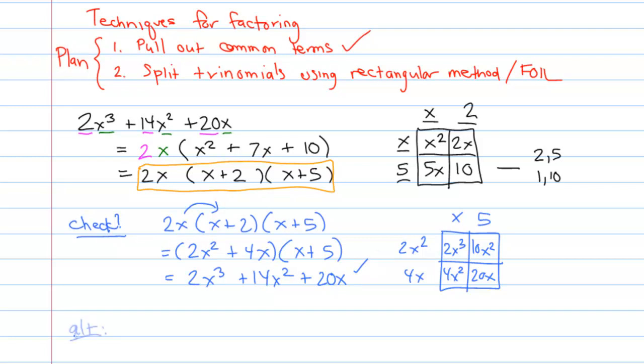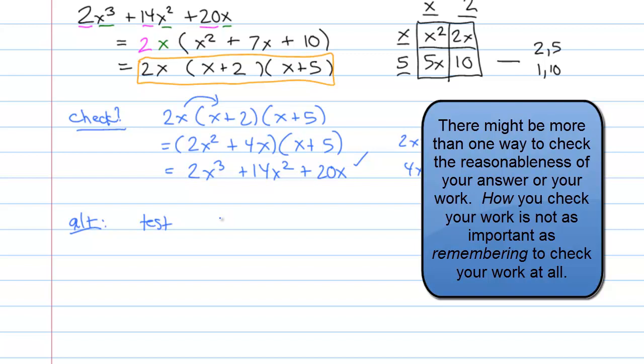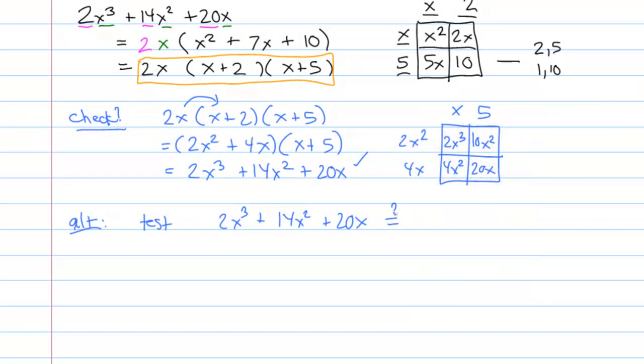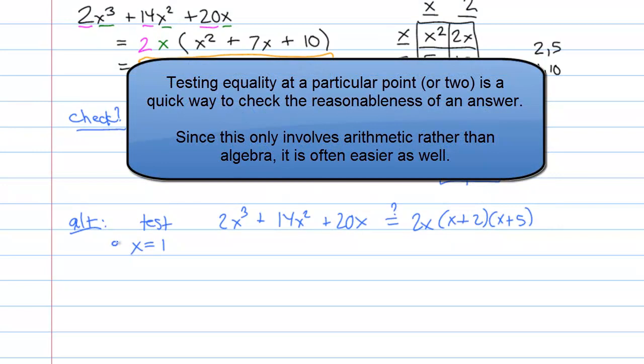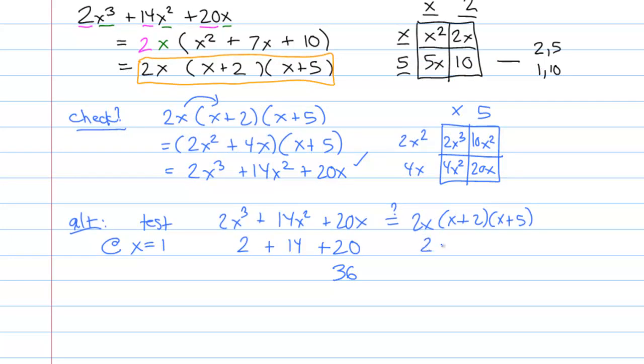A slightly different check, not as thorough, but sometimes a little bit easier to do in a pinch, would be to test whether or not 2x cubed plus 14x squared plus 20x is equal to 2x times x plus 2 times x plus 5 at a single point or one or two points. For example, we could test it at x equals 1. If I plug in x equals 1 on the left-hand side, I'm going to get 2 plus 14 plus 20, which would be 16 plus 20 or 36. On the right-hand side, I'm going to have 2 times 3 times 6. 6 times 6 is also 36. So since these two expressions match at x equals 1, that would be evidence in favor of them being equal.